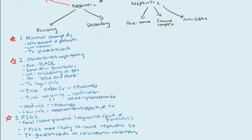Now let's move on to secondary causes of nephrotic syndrome. Secondary causes are basically any conditions where you have some systemic problem that leads to a nephrotic type syndrome. Most commonly, the one you'll see most often is diabetic nephropathy. The findings on biopsy are going to be mesangial expansion, nodular sclerosis, and what's called the Kimmelstiel-Wilson lesions.